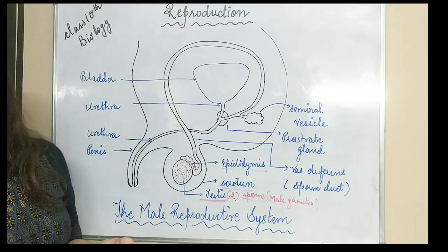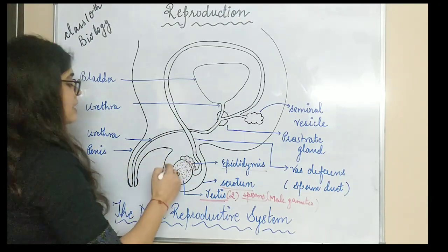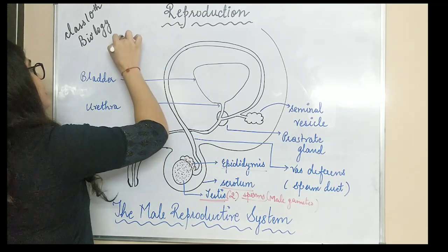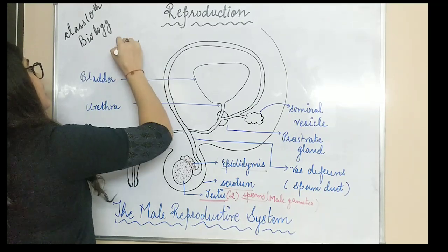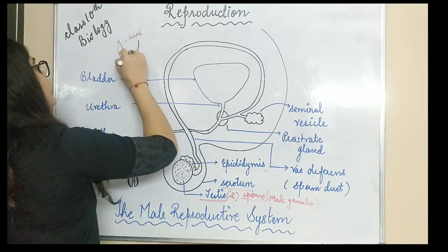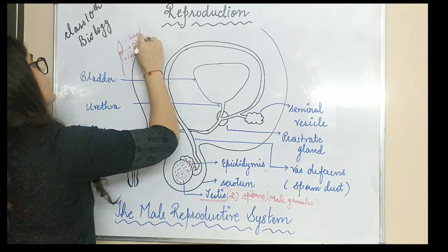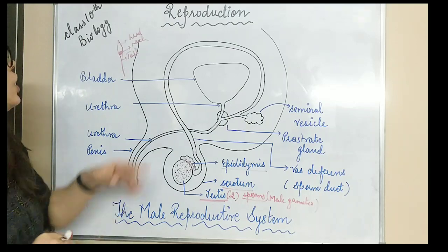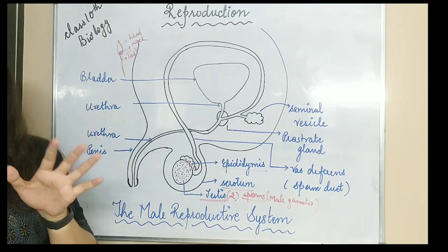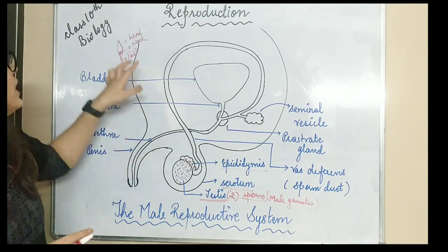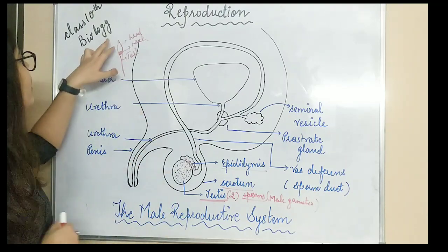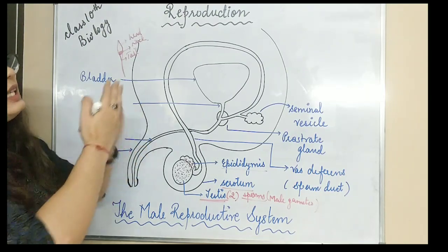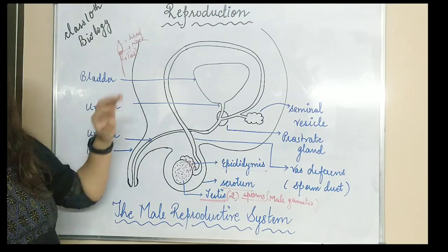Now, sperms are floating structures. This is the head, this is the tail, and this is the neck region. The neck region is full of mitochondria — mitochondria is the powerhouse of the cell — so the neck region of the sperm is filled with mitochondria to provide energy. The tail is mainly used for locomotion and movement. In the head there is the acrosome, which we will discuss later.